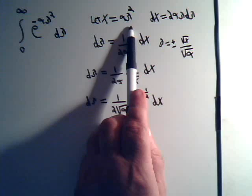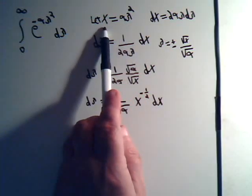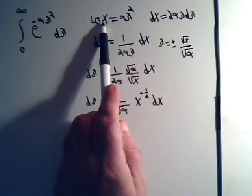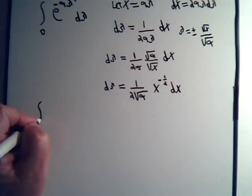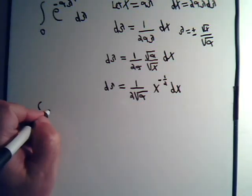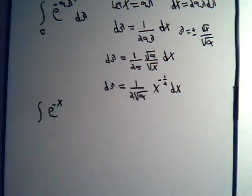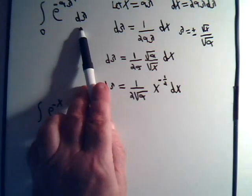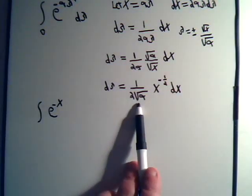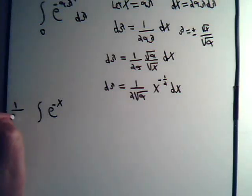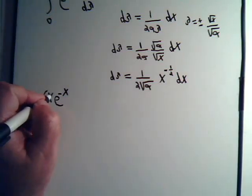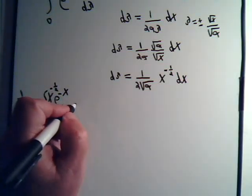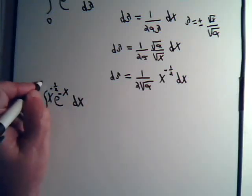Lambda goes from 0 to infinity. When lambda is 0, x will be 0; when lambda is infinity, x will be infinity. So the integral becomes e to the minus x, with d lambda replaced by this expression — the constant pulled outside — giving x to the minus one-half dx, with x going from 0 to infinity.